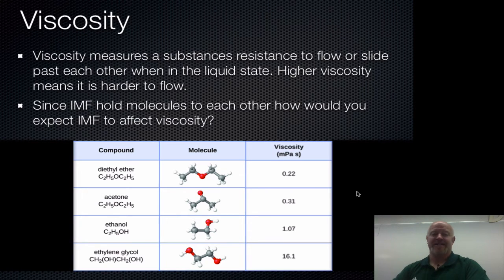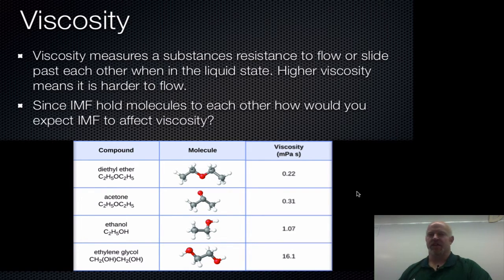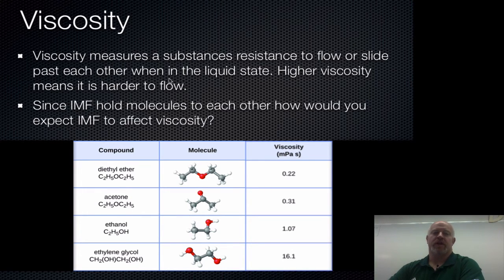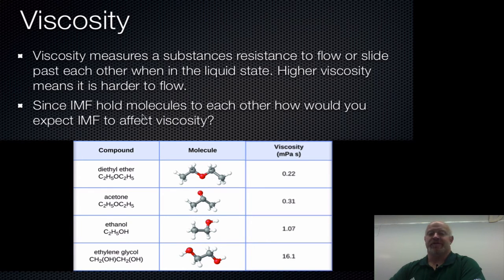The next topic is viscosity. Viscosity measures resistance to flow. Things that are very viscous are like maple syrup or honey. Things that have low viscosity are like gasoline or cleaners — they flow really easily. To be able to flow means that molecules have to slide past each other, which means they can't be locked by intermolecular forces. So the higher your intermolecular forces, the harder it is to flow. We should see that intermolecular forces will control our viscosities. Let's take a look at the data.